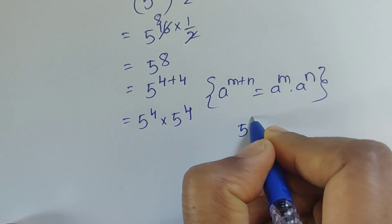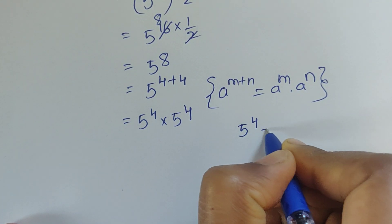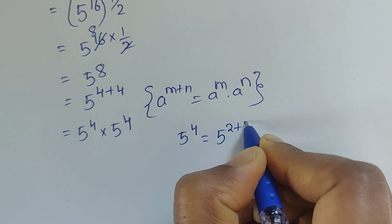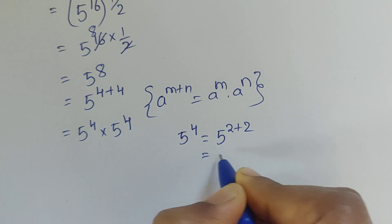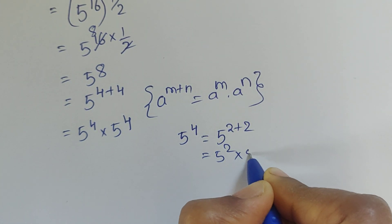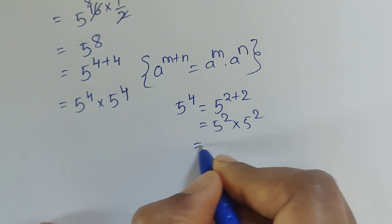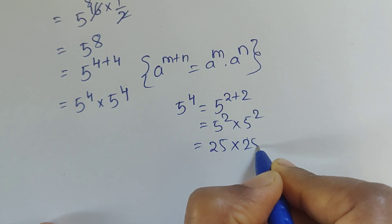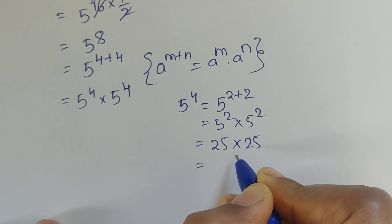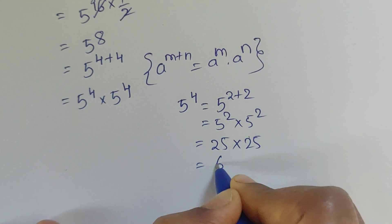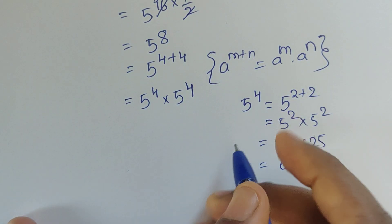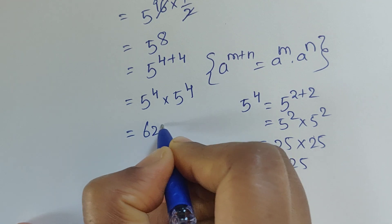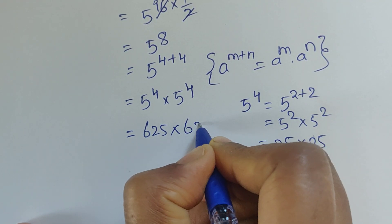Now we find the value of 5 to the power of 4. We have 5 to the power of 4 equals 5² times 5², and 5 squared equals 25, so 25 times 25 equals 625. Therefore 5 to the power of 4 is 625, and our expression becomes 625 times 625.